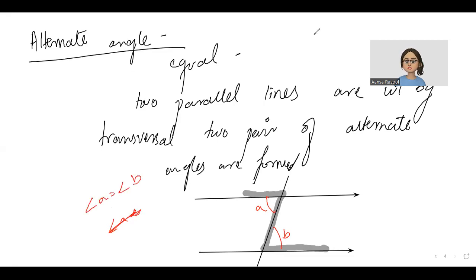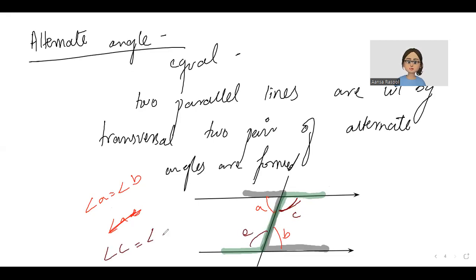Similarly, there is another Z-shape formed. Let me show you — like this. So these angles are also equal. So angle C is equal to angle E. Now let's understand some questions on it so that you understand these things in detail. Let's move on to the questions.